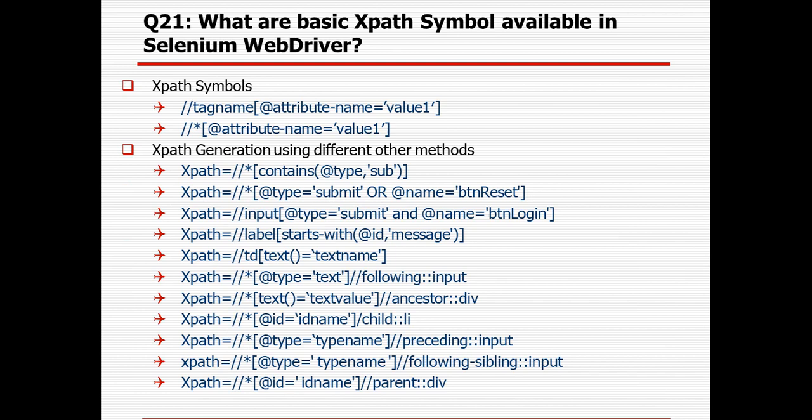What are the basic XPath symbols available in Selenium WebDriver? Generally we use the double-slash format: //tagName[@attributeName='value']. For example, on a login page for the user ID input box, the tag name is input, and if the name attribute value is 'userId', the XPath would reference that. For contains, AND, OR, starts-with, text, following, ancestor, child, preceding, following-sibling, and parent — the symbols and syntax have been jotted down on screen. You can have a look and create your own XPath.